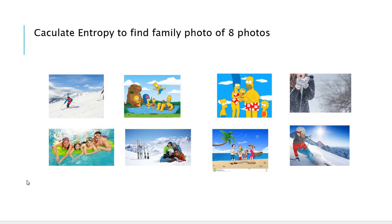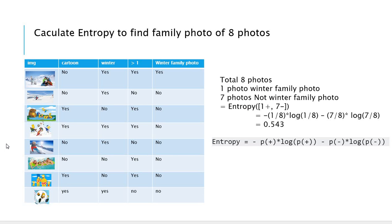So as you remember, we had the example of eight pictures to find the winter family photo from here. So before we select the first attribute here, we need to know first the base status entropy. We have eight pictures and just have one winter family photo here. So total eight, and one photo is a winter family photo and seven photos are not the winter family photo.